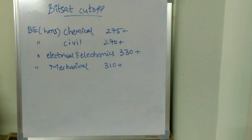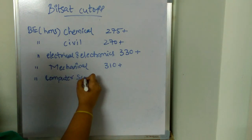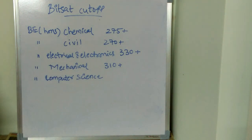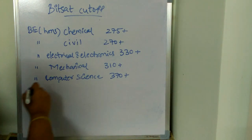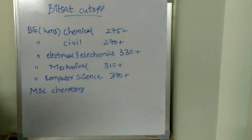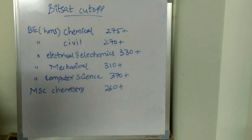For BE Honors Computer Science, the cutoff is going to be... For MSc Chemistry, the cutoff is going to be above 260 in BITS Pilani. So coming to MSc Economics...